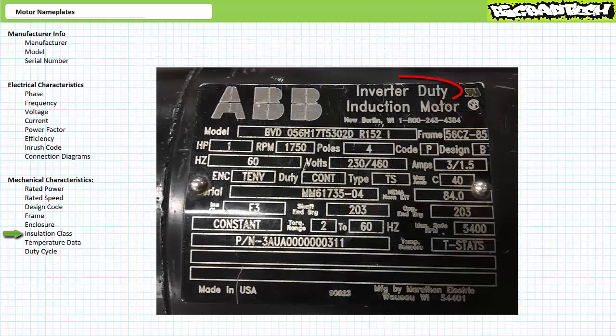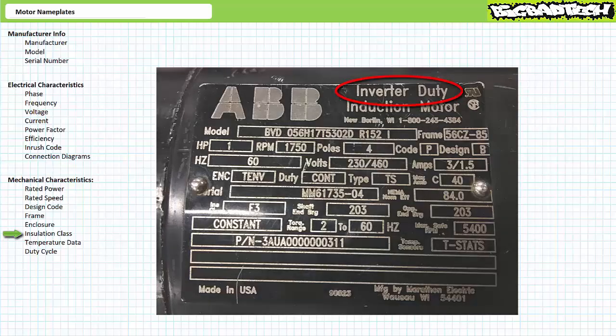A related entry — inverter or vector duty — if it appears, designates a motor as suitable for operation with a motor drive. A motor drive, sometimes called a variable frequency drive, VFD, or inverter, is a power electronics device that can vary excitation frequency and voltage magnitude to change rotational speed and torque. Motors designed to work with motor drives have upgraded insulation and can remain cool even at reduced operational speeds.